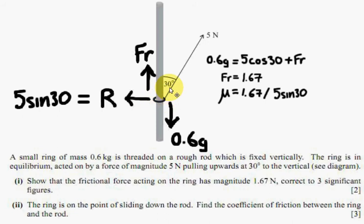Well we know it's 0.6 kg, this ring, so its weight is 0.6g Newtons, and we know the friction is going upwards because it's on the point of sliding down the rod.